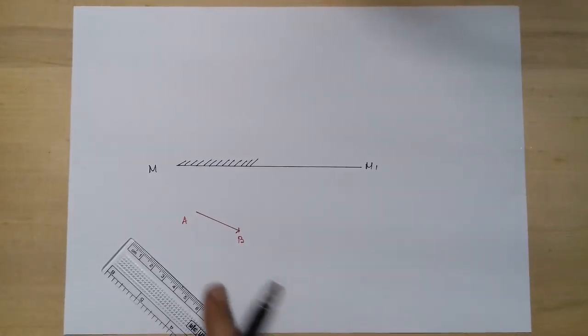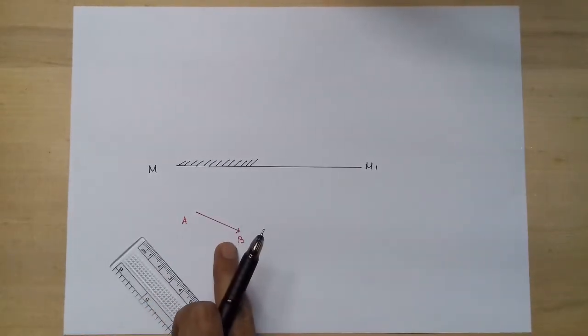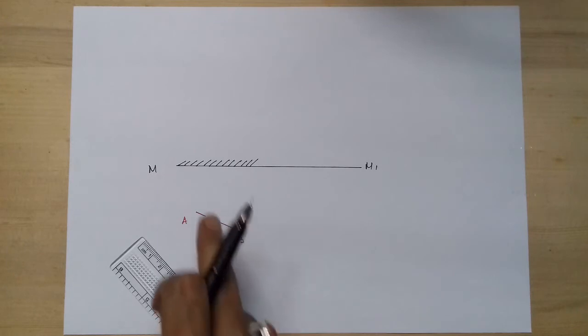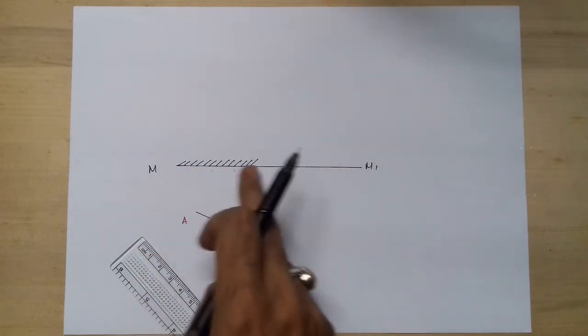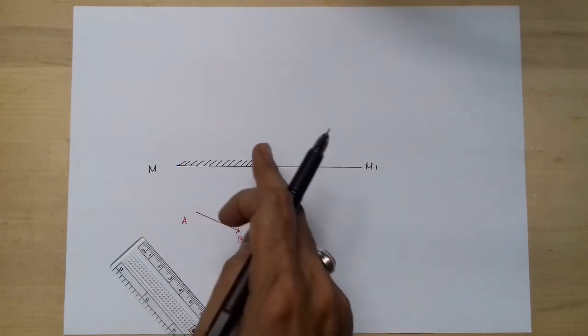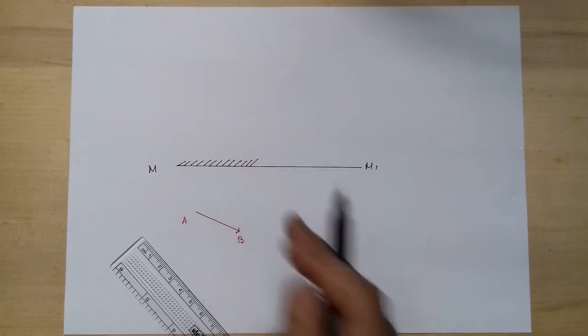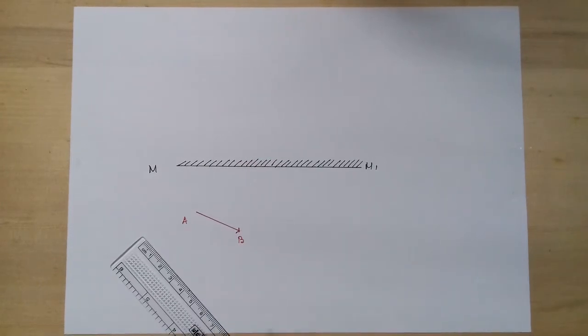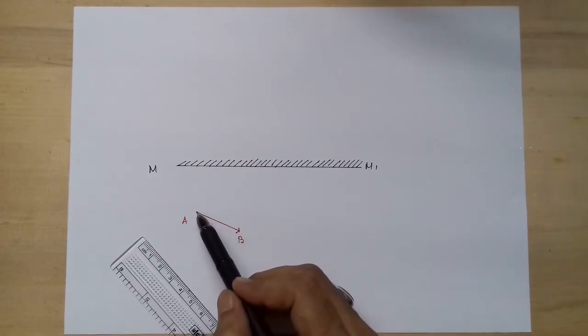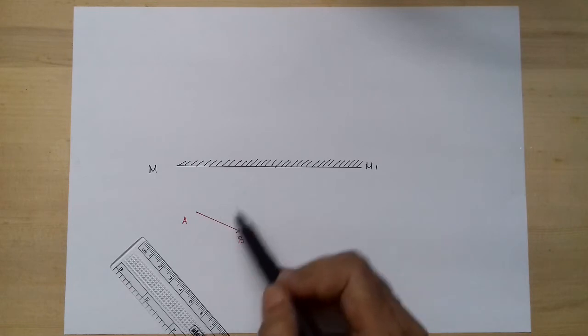Let AB be that extended object in front of the plane mirror MM1. This is the coated surface; I am going to complete it. Out of many rays coming out of this object, we will consider two rays from this end and two from that end which will strike the mirror.